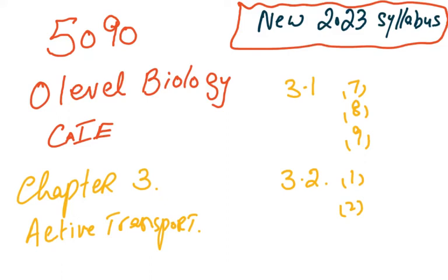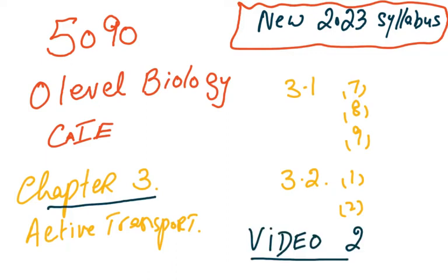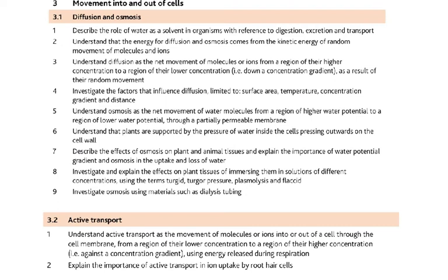Bismillahirrahmanirrahim. We are starting the second video on Chapter 3, covering sections 3.1 and 3.2. The topics include: describing the effects of osmosis on plant and animal tissues, explaining the importance of water potential gradient, and osmosis in the uptake and loss of water.